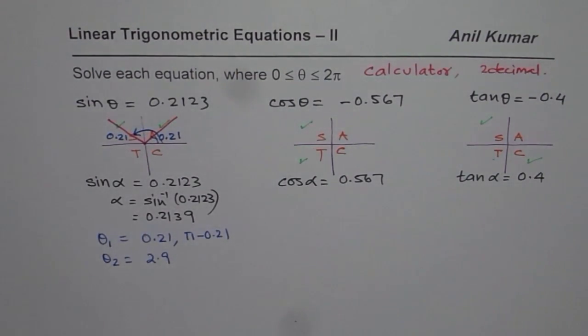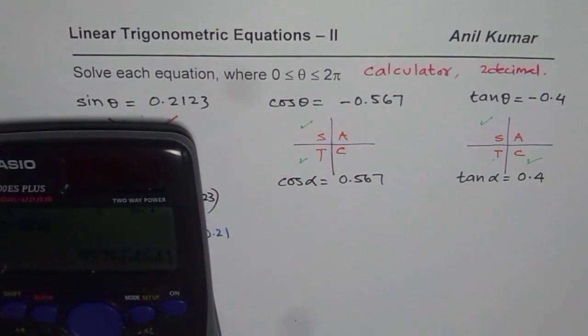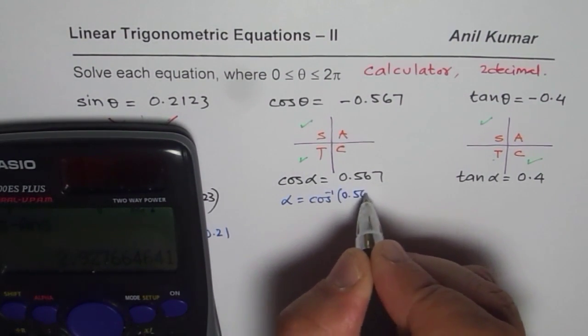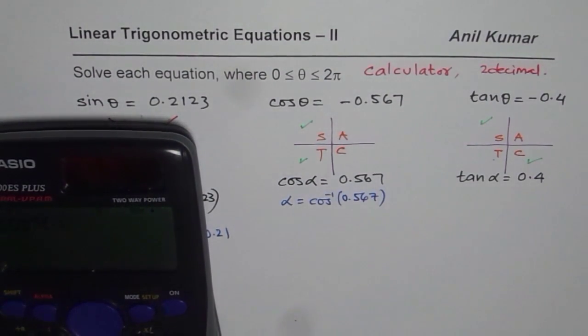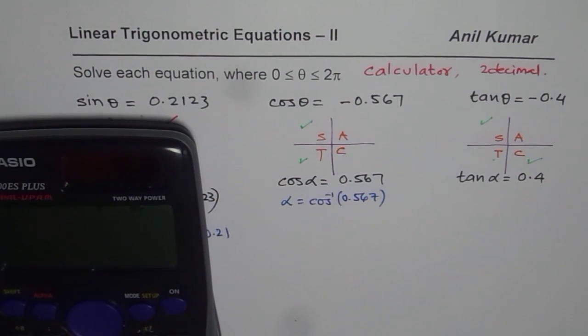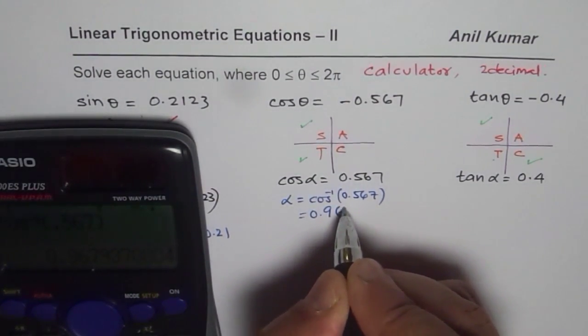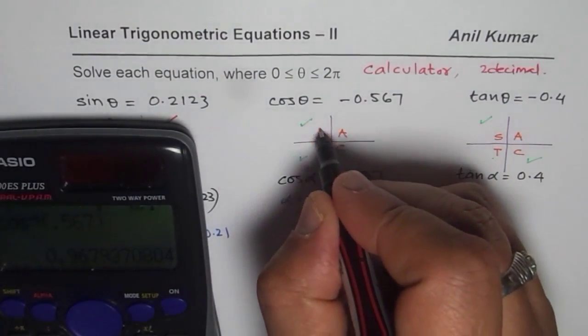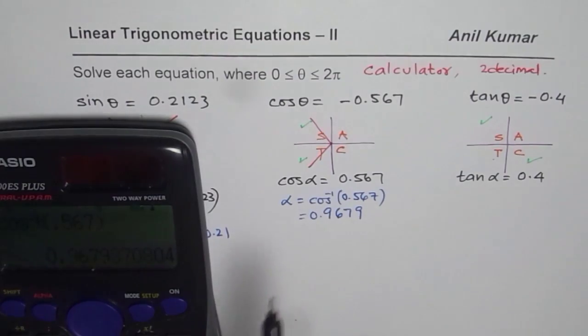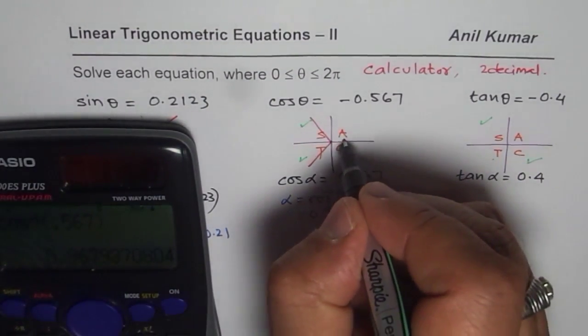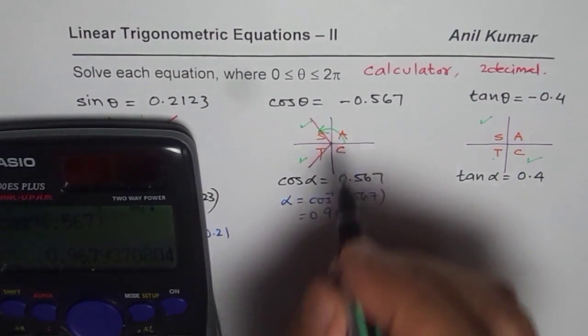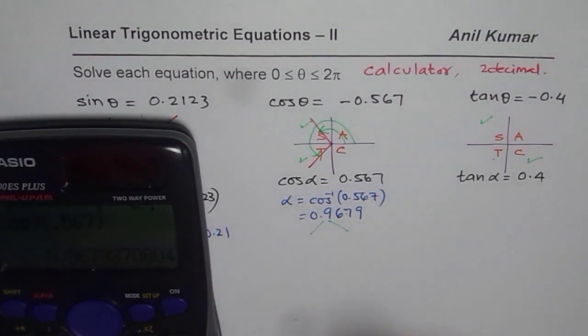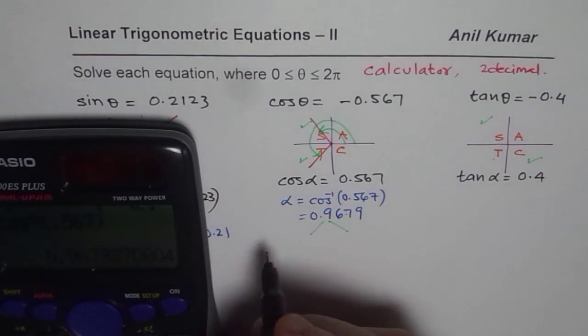That is how you find two different answers, θ₁ and θ₂. And these answers are principal angles between 0 to 2π. Let us do the next question, which is finding α now. As you can see, as we did last time, let us repeat the process. α = cos⁻¹(0.567). So we will do cos inverse of 0.567 equals 2. So we get a value, which is 0.9679.